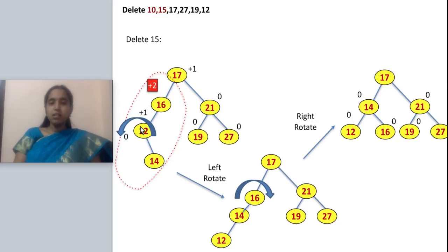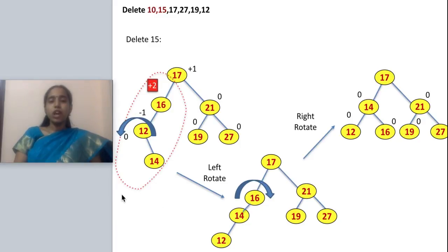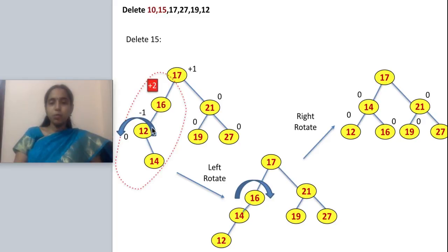Now I calculate the balance factor. Here it is 0, here minus 1, and at the top node it is 2 minus 0, which is plus 2 — an unbalanced state. I need to make rotation. Analyzing the case, it is left-right, so I perform a left rotation followed by a right rotation.